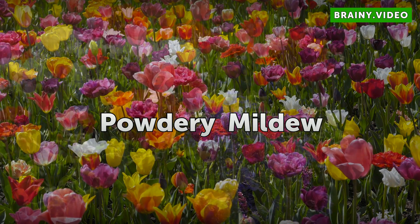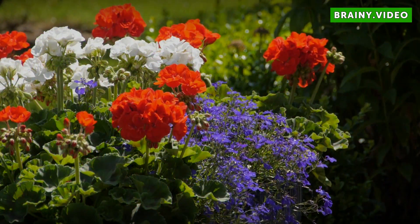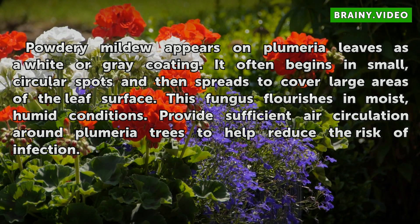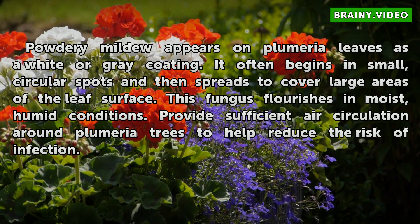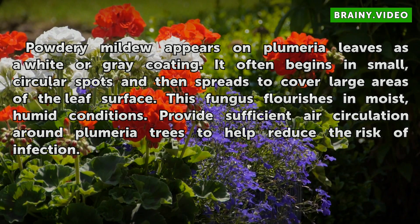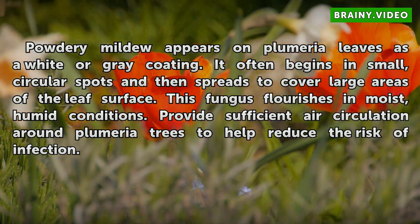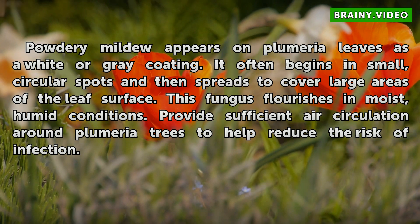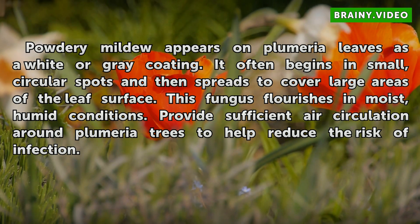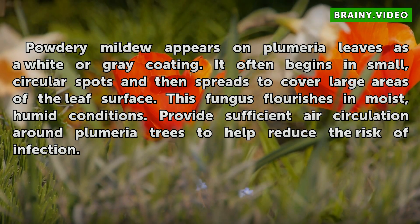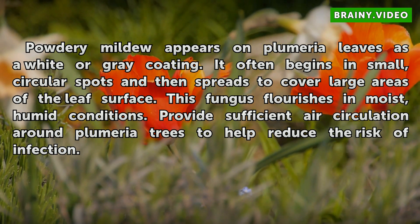Powdery Mildew. Powdery Mildew appears on Plumeria leaves as a white or grey coating. It often begins in small circular spots and then spreads to cover large areas of the leaf surface. This fungus flourishes in moist, humid conditions. Provide sufficient air circulation around Plumeria trees to help reduce the risk of infection.